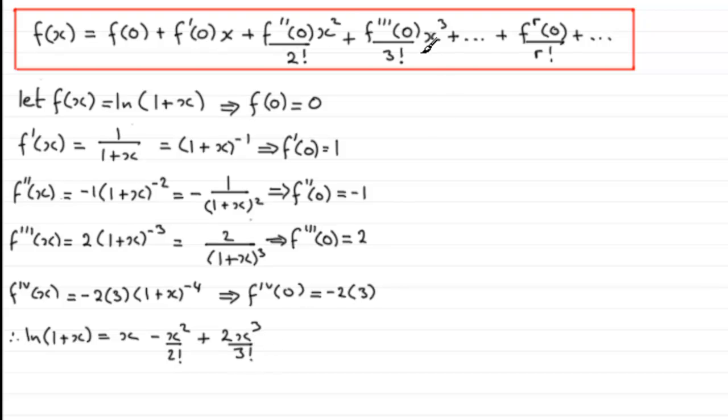Next term would have been, with the f^(4)(x), that will be a negative term, and it'll be -2×3×x^4 over 4!. And it would have carried on.